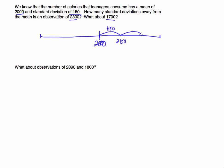If I add another 150, I would be at 2,300. I'm also going to go in the opposite direction. If I subtract a standard deviation from the mean, I would be at 1,850, and if I subtract another standard deviation — a value of 150 — I would be at 1,700.